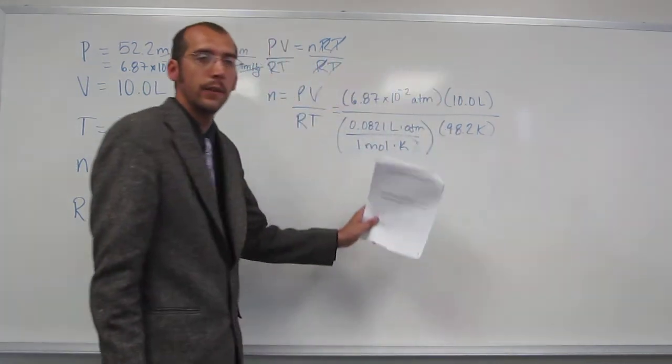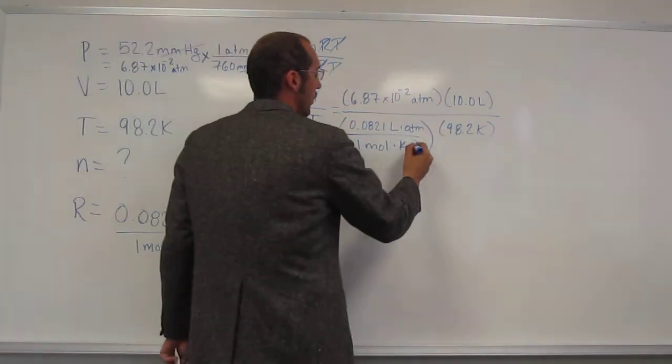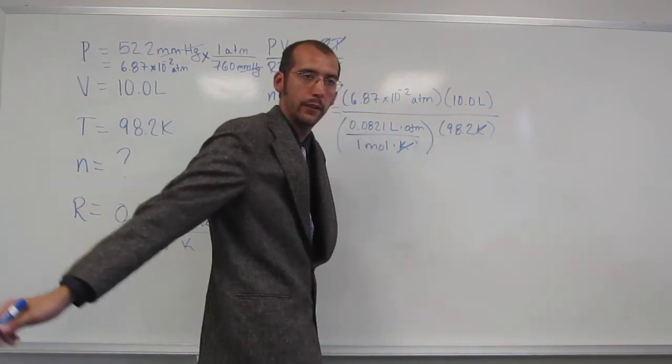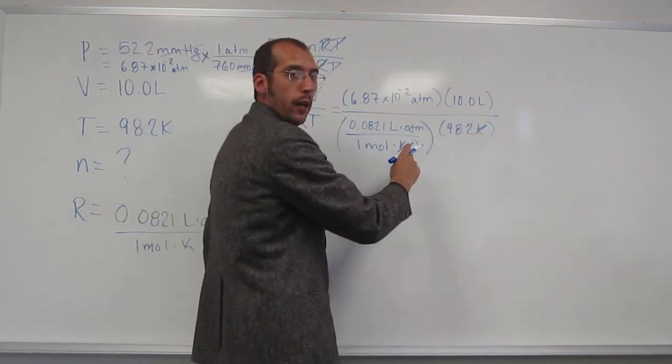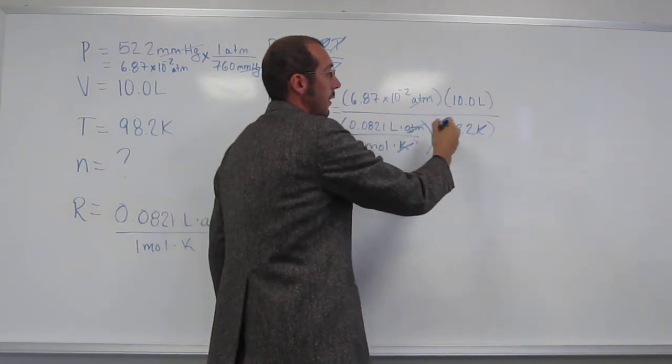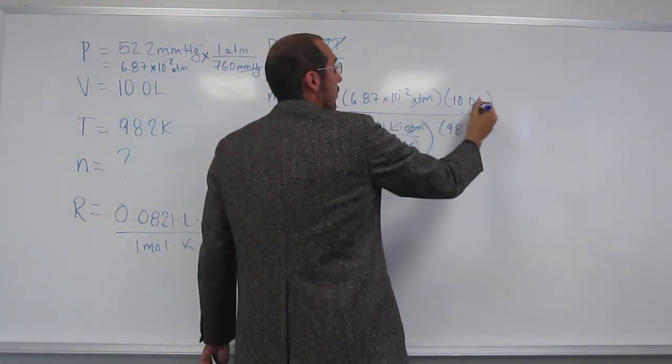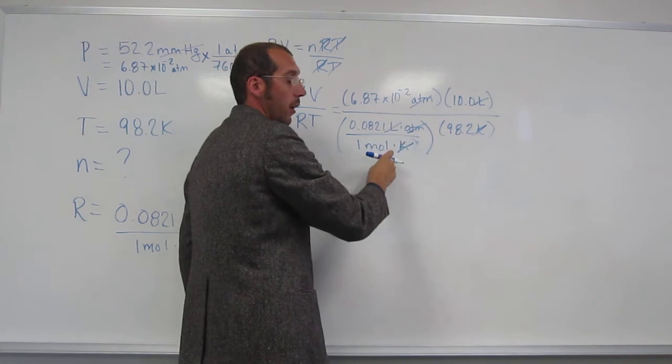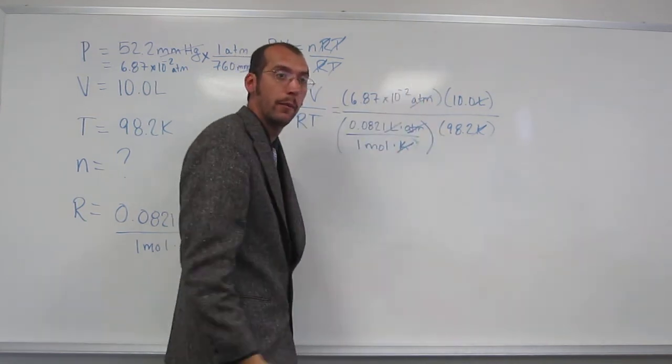98.2 kelvin. And, you know, if you've done this right, if your units cancel out, right? So, kelvin will cancel with kelvin there, right? Because this is on top, that's on bottom. This is on top, that's on the bottom. That'll cancel with that. 1 over 1 over the thing goes up to the top, if you remember in math.